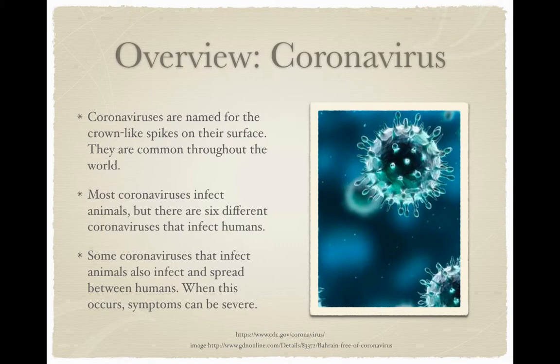An overview of the coronavirus. Coronaviruses are named for the crown-like spikes on their surface. They are very common throughout the world. Most coronaviruses infect animals, but there are six different coronaviruses that also infect humans. Some coronaviruses that infect animals also infect and spread between humans, and when this occurs, symptoms can be severe.